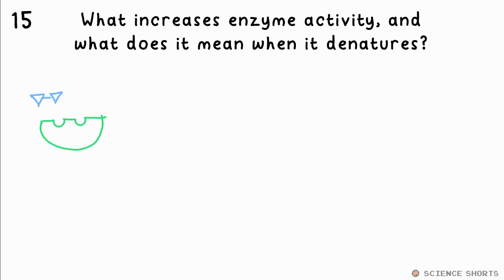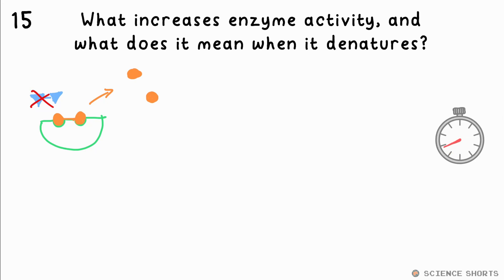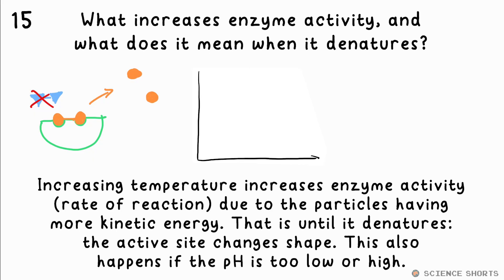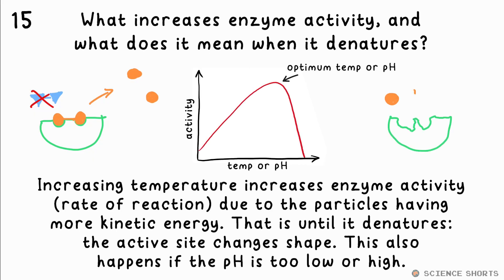Question 15. What increases the rate of activity of an enzyme, and what does it mean when it denatures? Increasing temperature increases the activity of the enzyme, until the temperature gets so high that it denatures. The active site changes shape, and it no longer works. They also have an optimum pH — too high or low pH and the enzyme will denature.